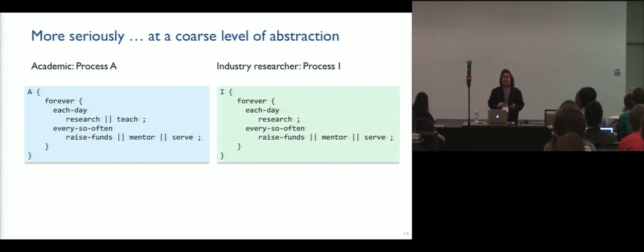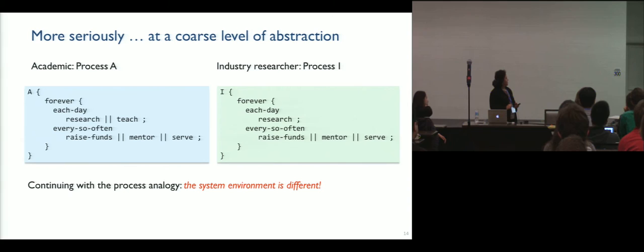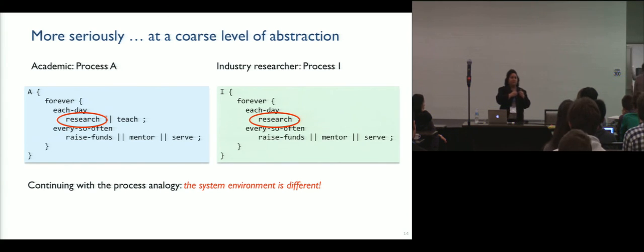So, getting back to our process analogy, I feel like the differences really are that the system environment is different. Autonomy, resources, and collaborations at an individual process, I might even say they are very similar and some variations, but it's really the system environment that is different. So, I haven't yet talked about the main part, which is what really moves us all, which drives us, which is research.